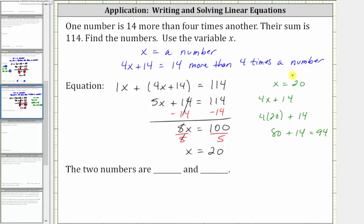So now we know one number is 20, and the other number is 94, where 20 plus 94 is 114, and 94 is 14 more than four times 20. I hope you found this helpful.